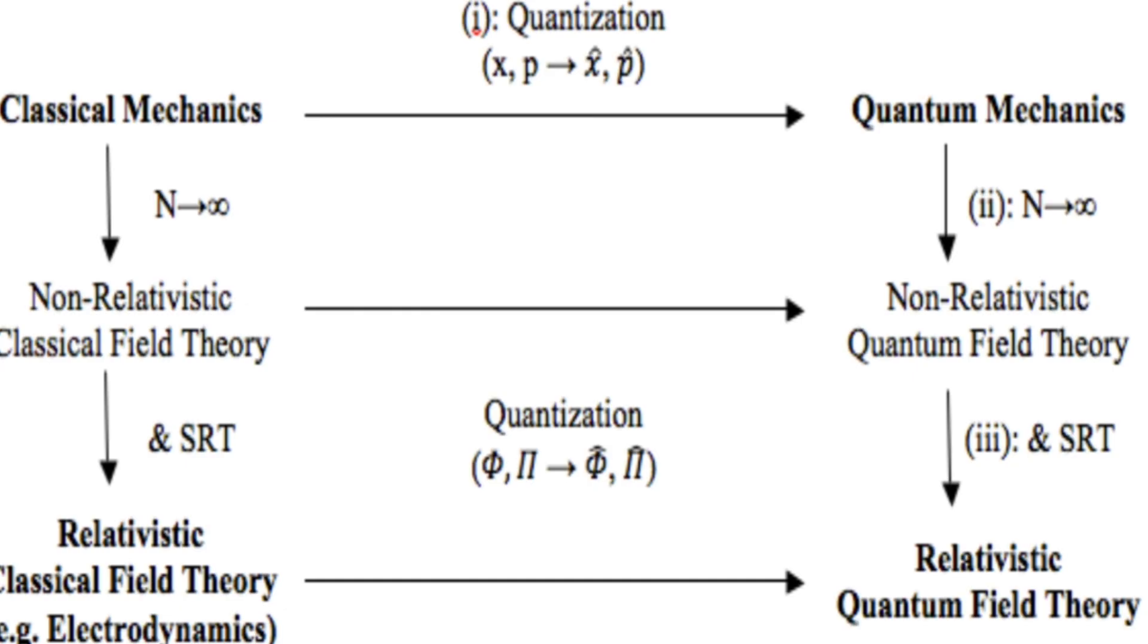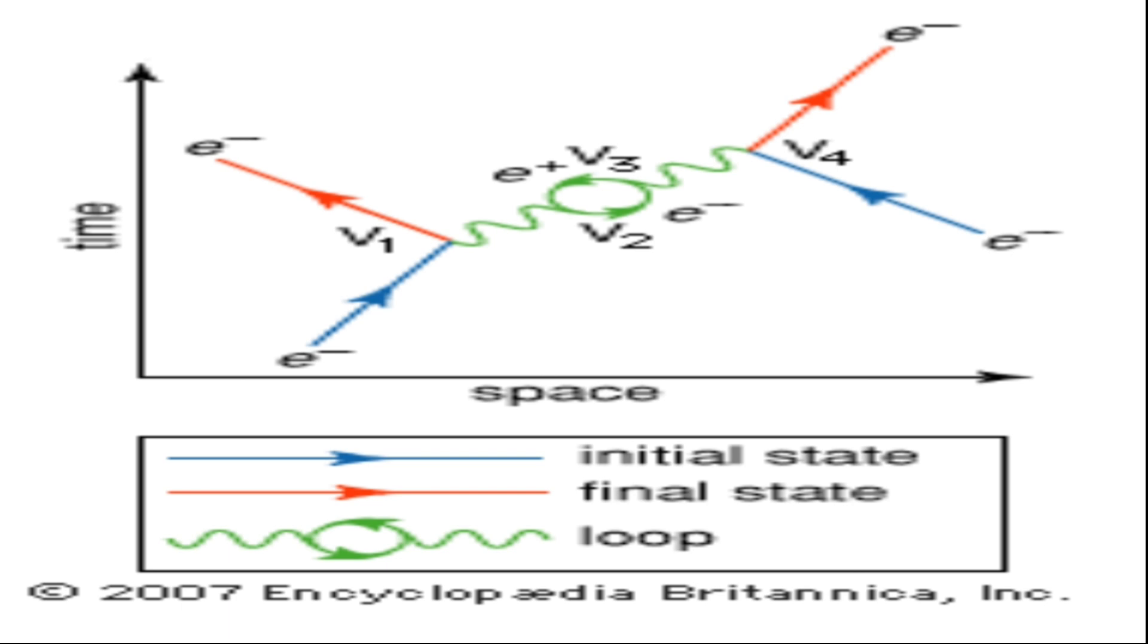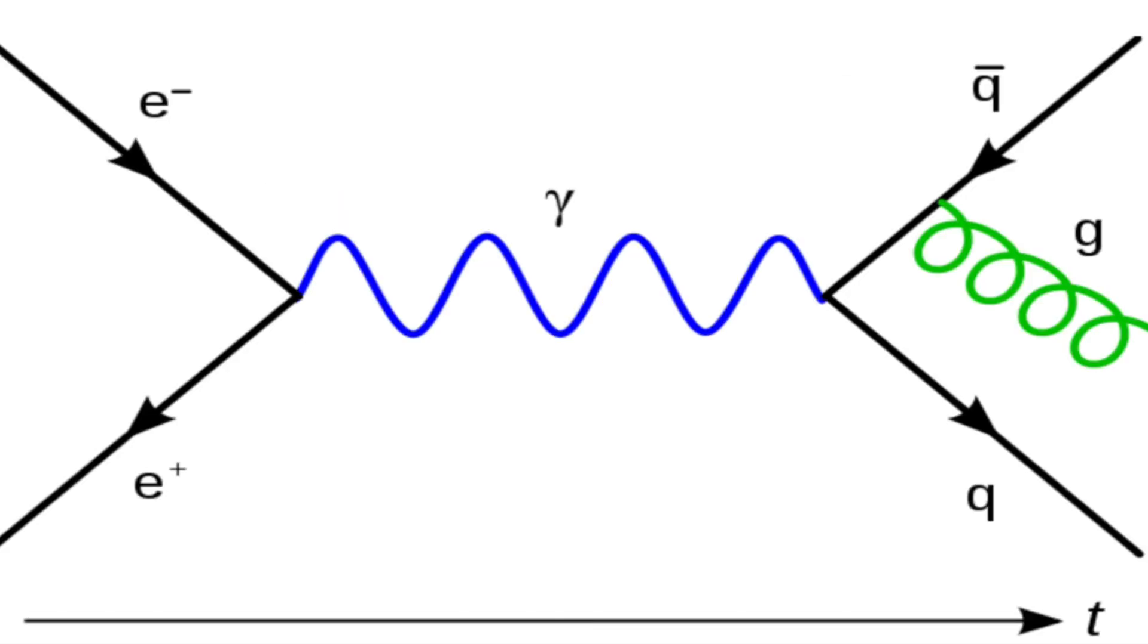How does QFT work? QFT works by using mathematical tools and rules to calculate the probabilities and outcomes of different processes and events involving particles and fields. QFT uses a special notation called Feynman diagrams, which are graphical representations of the interactions between particles and fields. Feynman diagrams look like lines and vertices, where each line represents a particle or a field, and each vertex represents an interaction or a transformation.